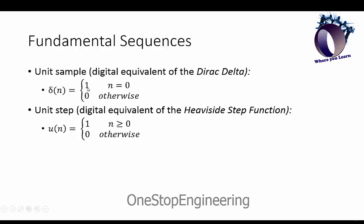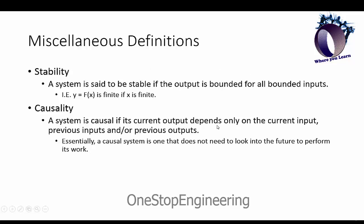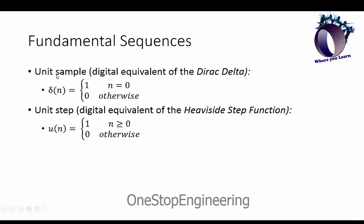Then we have the unit step function, which is the digital equivalent of a Heaviside step function where when n is greater than 0 or equals 0, then we have the function equal to 1. Otherwise it's set to 0. The other thing I should note here is that the unit sample and the unit step also shift just like in continuous time. If we had n minus 1 here instead of just n, this one would be moved 1 to the right, just the same as we do in continuous time.